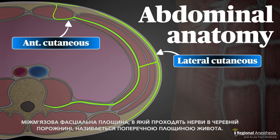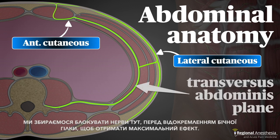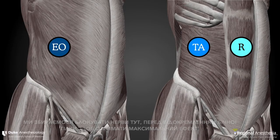The intermuscular fascial plane the nerves travel in within the abdomen is called the transversus abdominis plane. We're going to block the nerves here, upstream of the lateral branch takeoff, so we get the maximum effect.